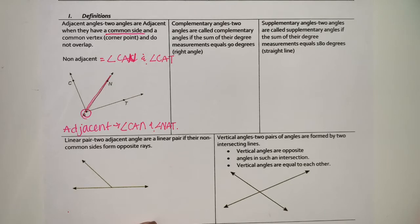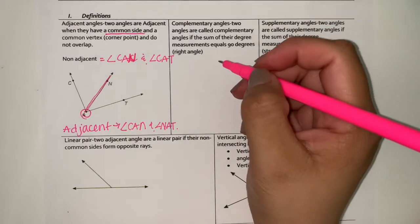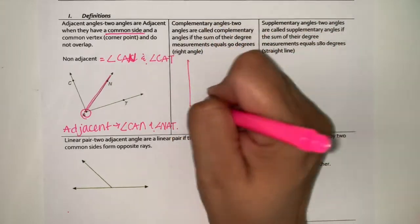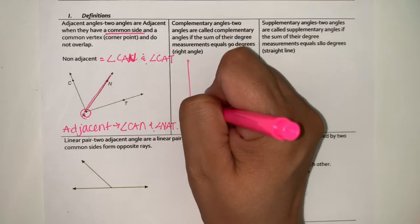Complementary angles. Two angles are called complementary angles if the sum of their degree measurements equals 90 degrees, which means a right angle. So let's make a right angle. We usually have that little square.